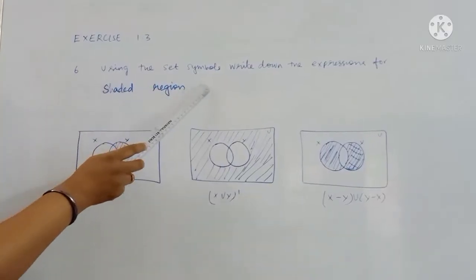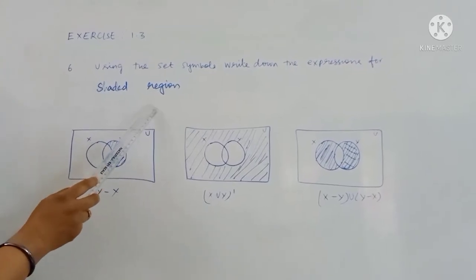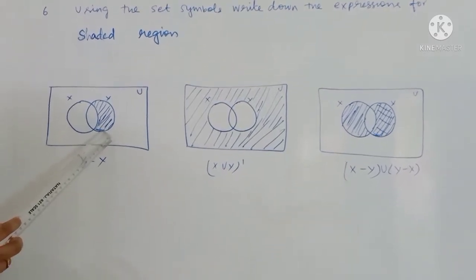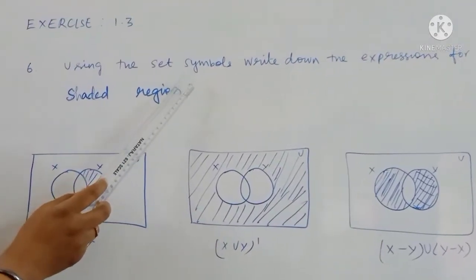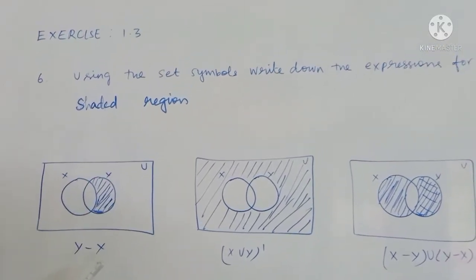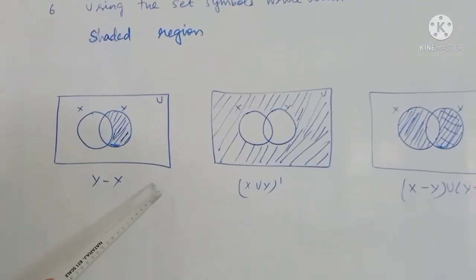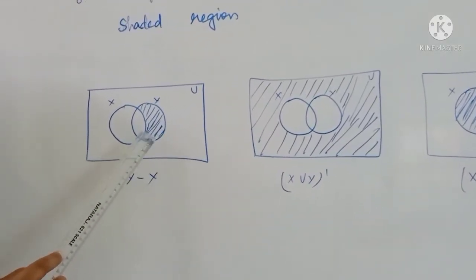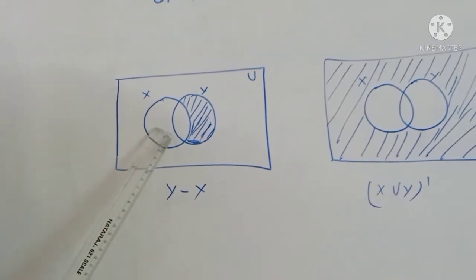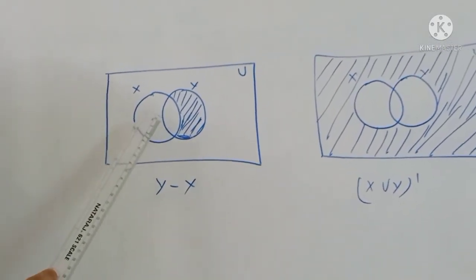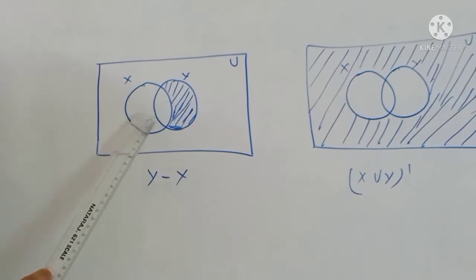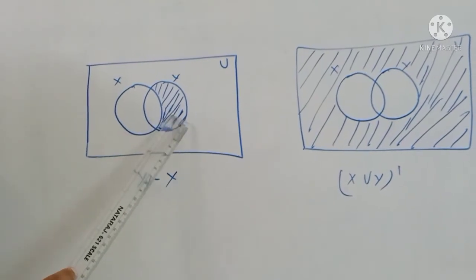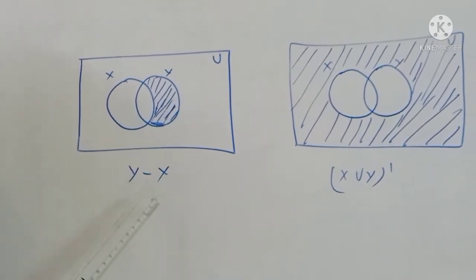Using set symbols, write down the expression for the shaded region. We can use union, intersection, minus, and symmetric difference (delta/triangle). In the first diagram, the shaded part is A minus B, so X minus Y. The middle part is X intersection Y. The right part is Y minus X.